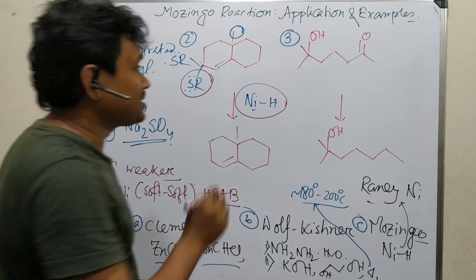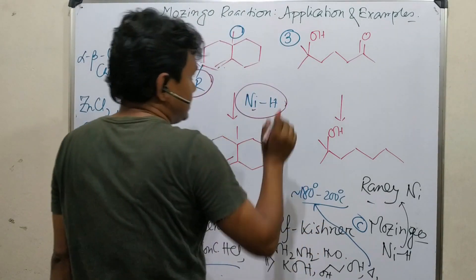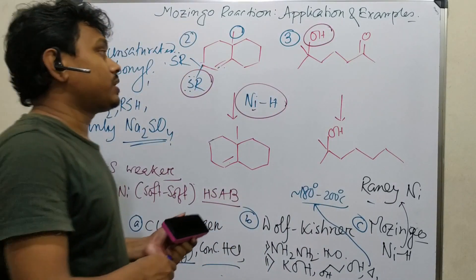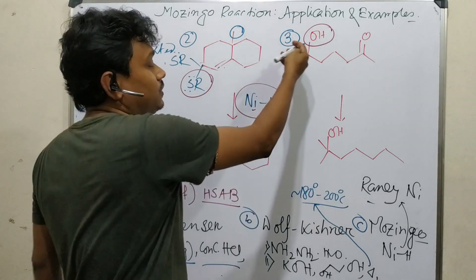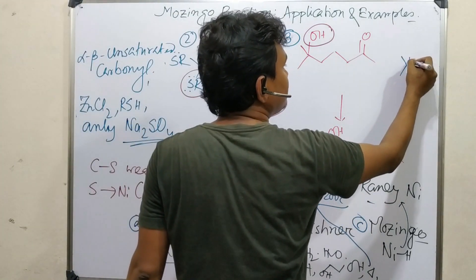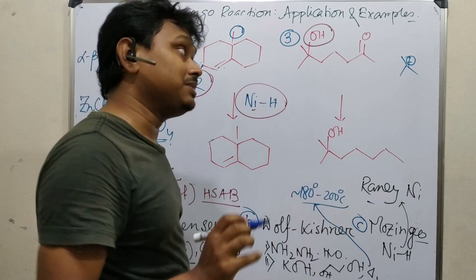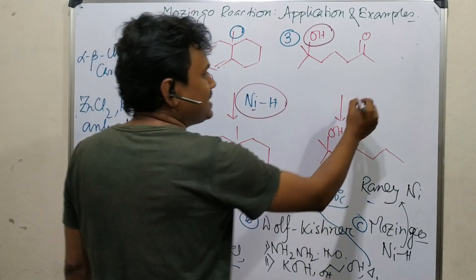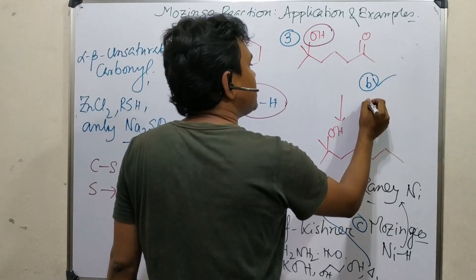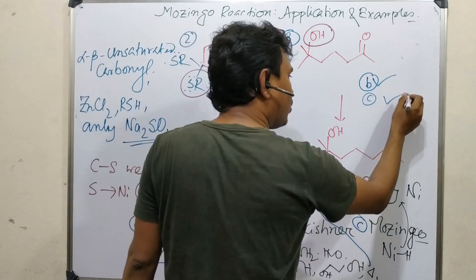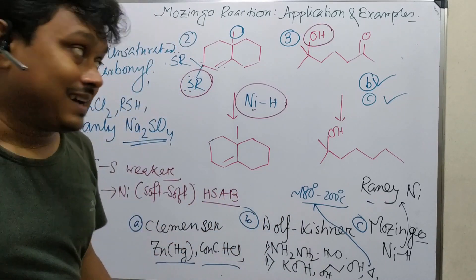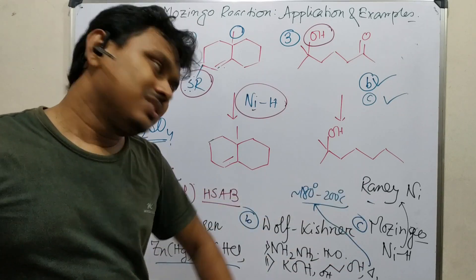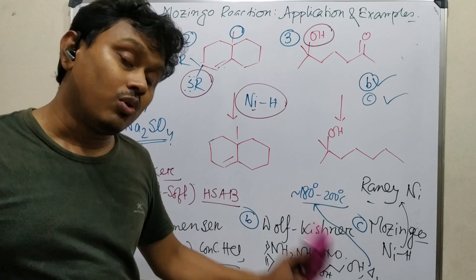Let's discuss the third problem. There is an OH group, and actually this is a tertiary alcohol — acid sensitive, because if it leaves it will produce a tertiary carbocation, which is highly stable. So we can't use acid. But in this case, we can use basic medium — that is Wolf-Krishna. That is possible. Even Mozingo is also possible. So don't always be biased that only one method will be useful.